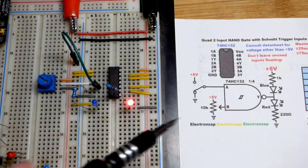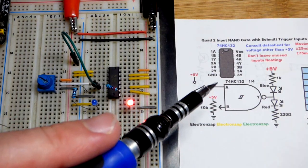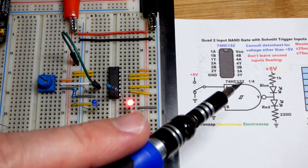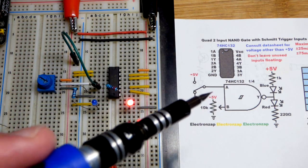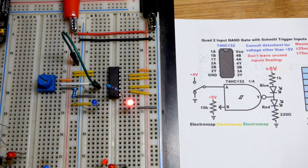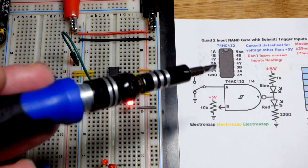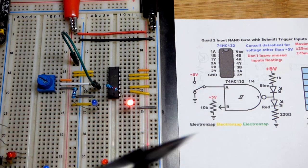This video is going to be almost the same as the last video, but last video we used the 74HC00 quad two-input NAND gate. Now we got the 74HC132. This is also quad NAND gates, but there's Schmidt trigger inputs.